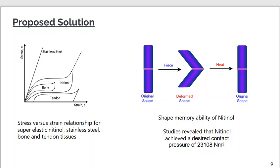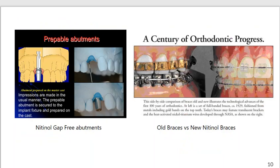Similarly, Nitinol gap-free abutments do not have gaps in them, which helps prevent bacterial growth. During a study, microbacterial analysis results showed no penetration of bacteria usually found in gaps between abutments and implants. This is due to the shape memory ability—it returns to its original shape, filling the gap. You can see the picture of Nitinol braces and old braces on the right-hand side.